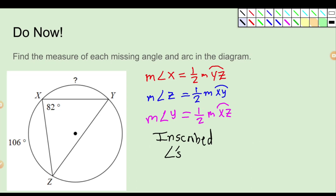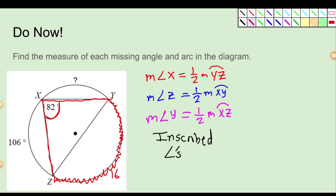Let's look at the first one. I'm going to use the red because it says it's in color red. So the measure of angle X — this angle right here — is equal to half of the measure of arc YZ. So what is the measure of arc YZ if the angle is half of it? Well, I just double that. So 82 times 2 is going to be 164.